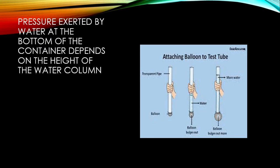In another demonstration, there is a glass tube with a rubber balloon attached at the bottom. When a small amount of water is filled, the balloon bulges out a little. When the height of the water column is much greater, the balloon bulges out more. The conclusion is that the pressure exerted by water at the bottom of the container depends on the height of the water column. That is why in high-rise buildings, water pressure on higher floors is less, whereas water pressure on floors closer to the ground is greater.